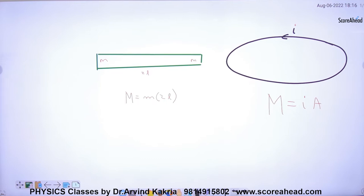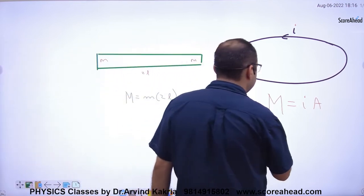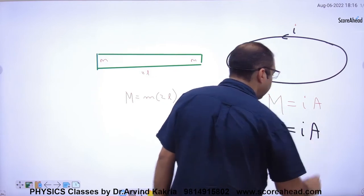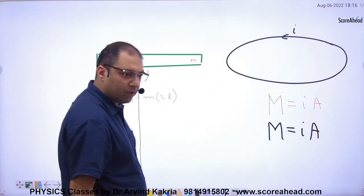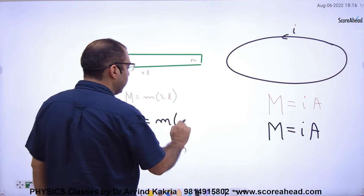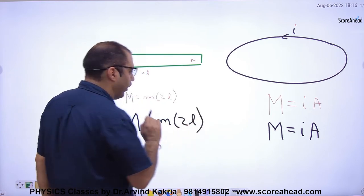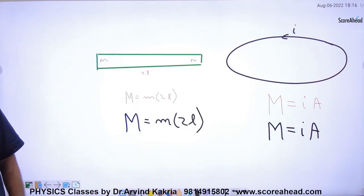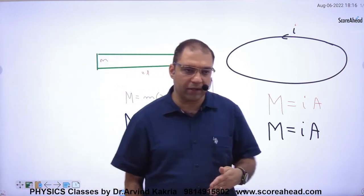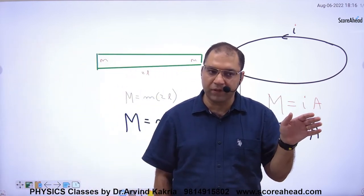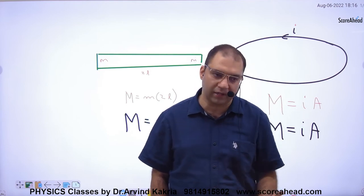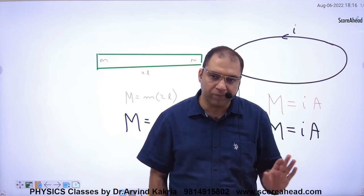So in summary: for a current-carrying loop, capital M equals current into area. For a bar magnet, capital M equals small m into 2L. We now have two categories — either a current-carrying loop or a bar magnet — and we apply different formulas for each.